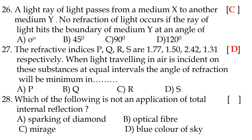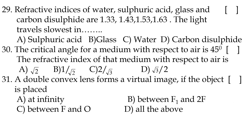Twenty-eighth question: which of the following is NOT an application of total internal reflection? Option D, blue color of sky. Twenty-ninth question: refractive indices of water, sulfuric acid, glass, and carbon disulfide are 1.33, 1.43, 1.53, 1.63 respectively; light travels slowest in option D, carbon disulfide. Thirtieth question: the critical angle for a medium with respect to air is 45 degrees; the refractive index is option A, root 2.